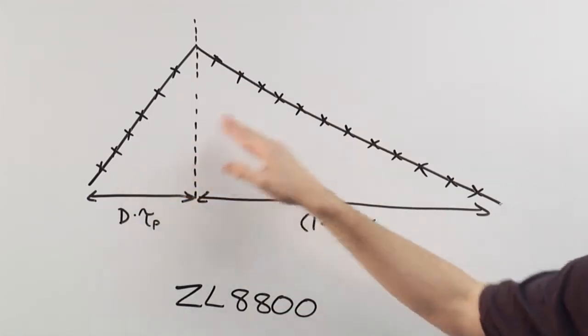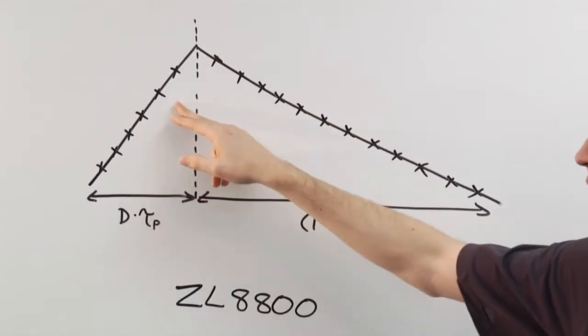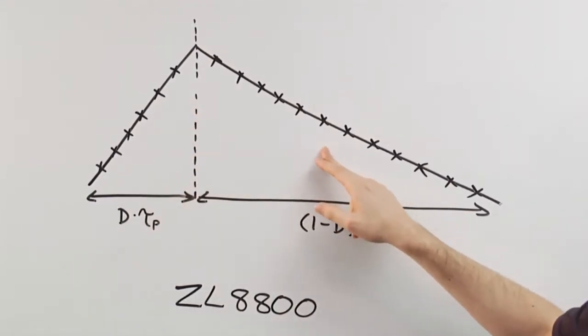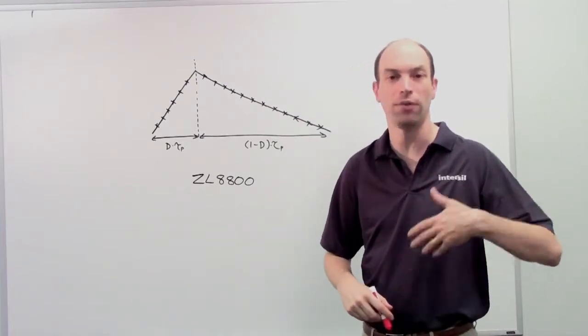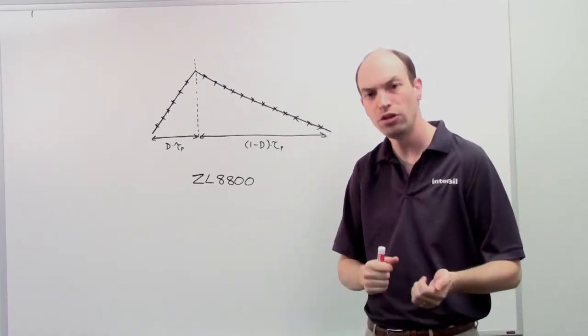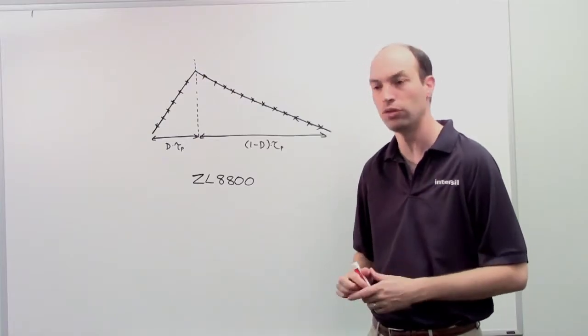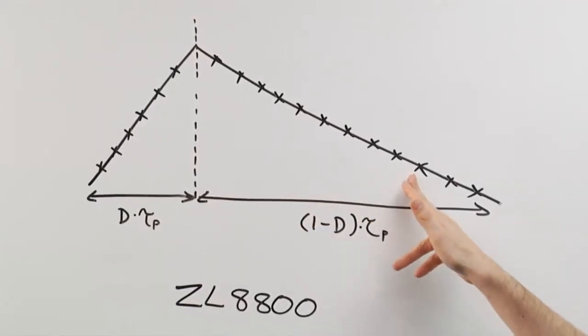You have a choice of two different slopes: up-slope sampling or down-slope sampling. Now, the default is the down-slope sampling because for most applications, if you're running from a 12-volt input, you're converting to low output voltages, so this is going to be the bulk of period of time.